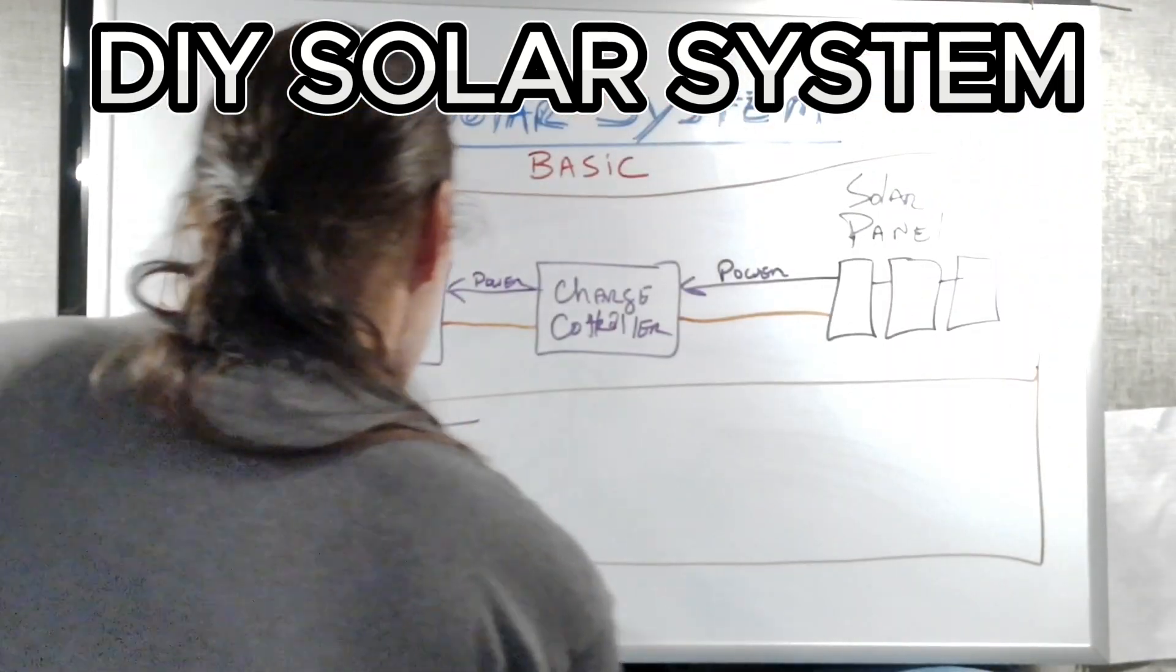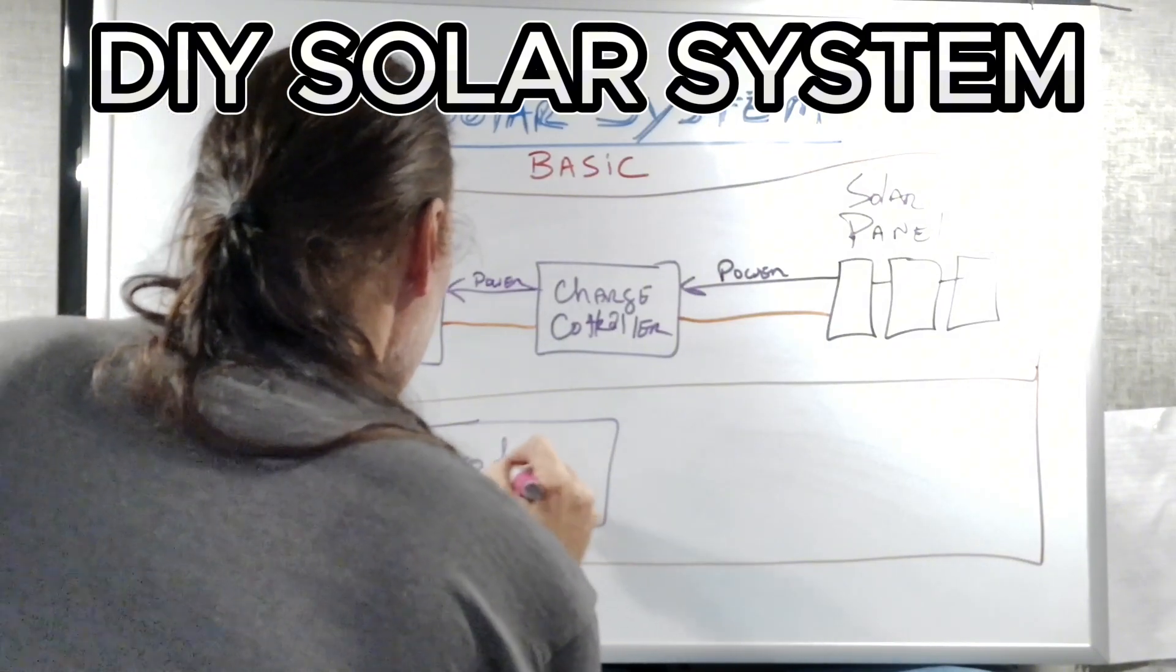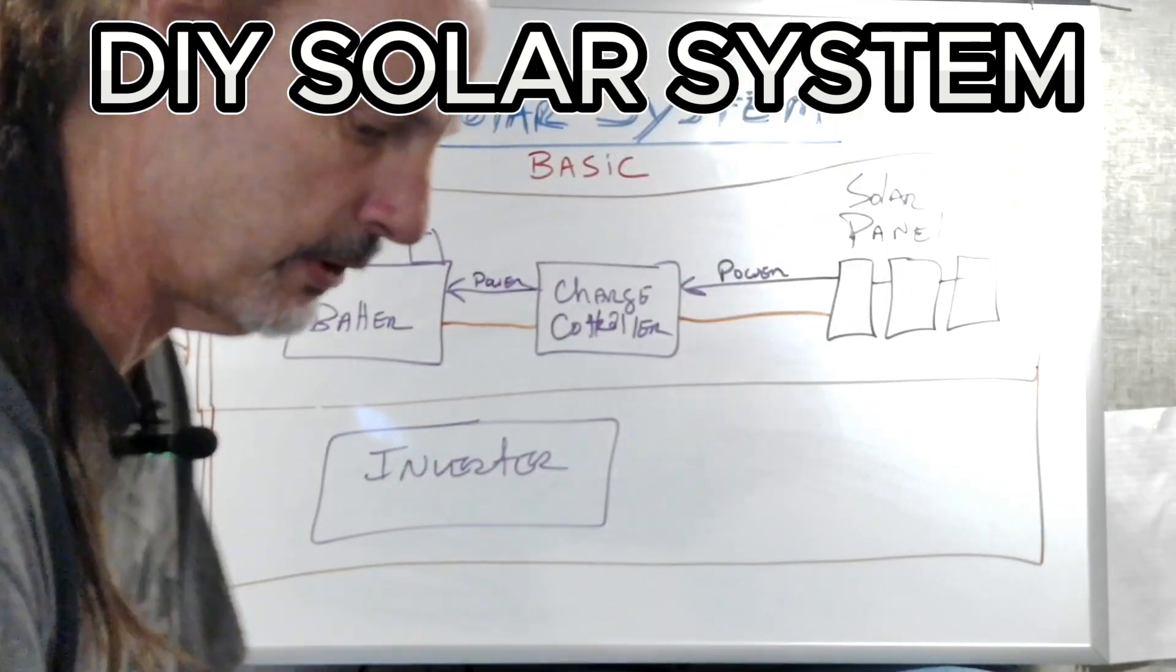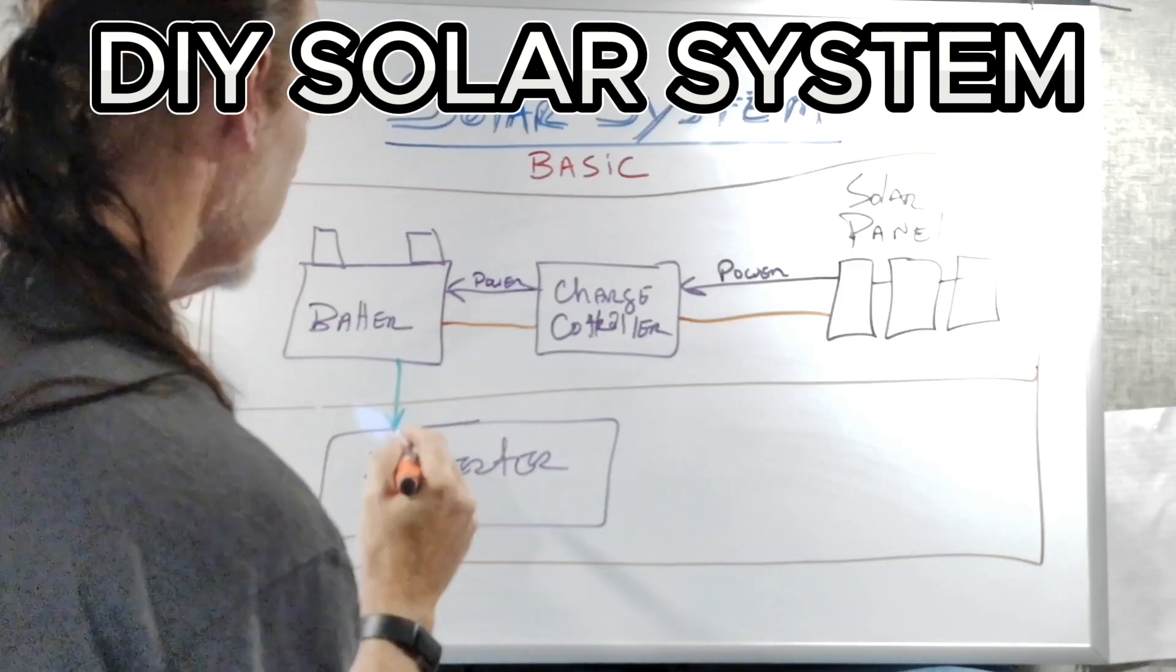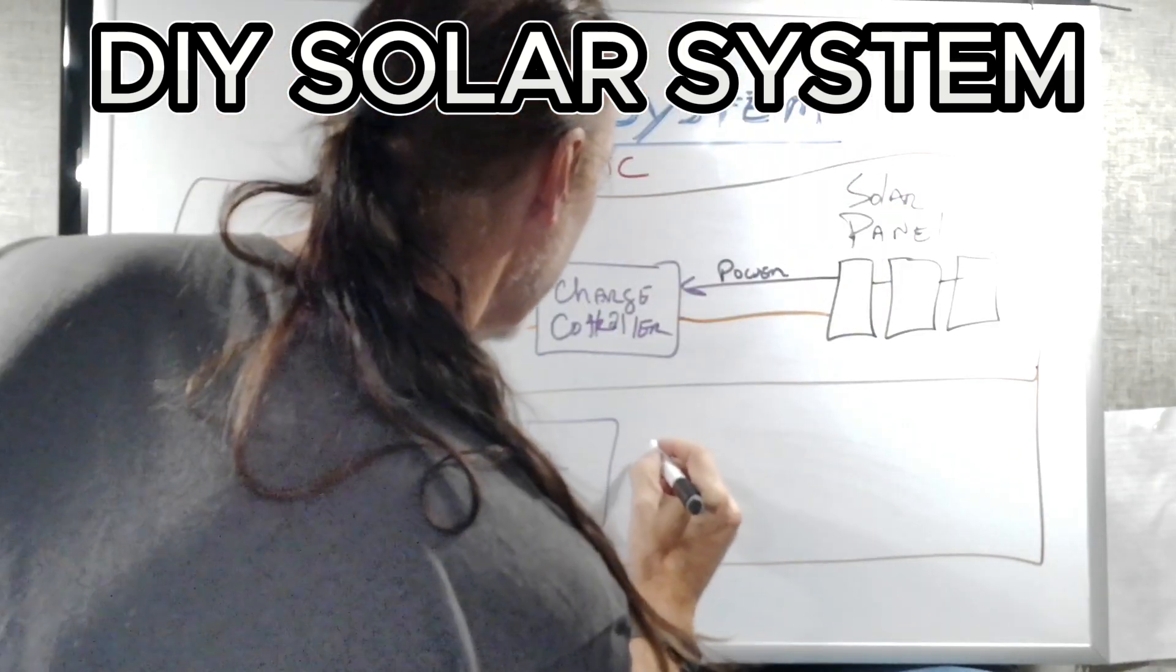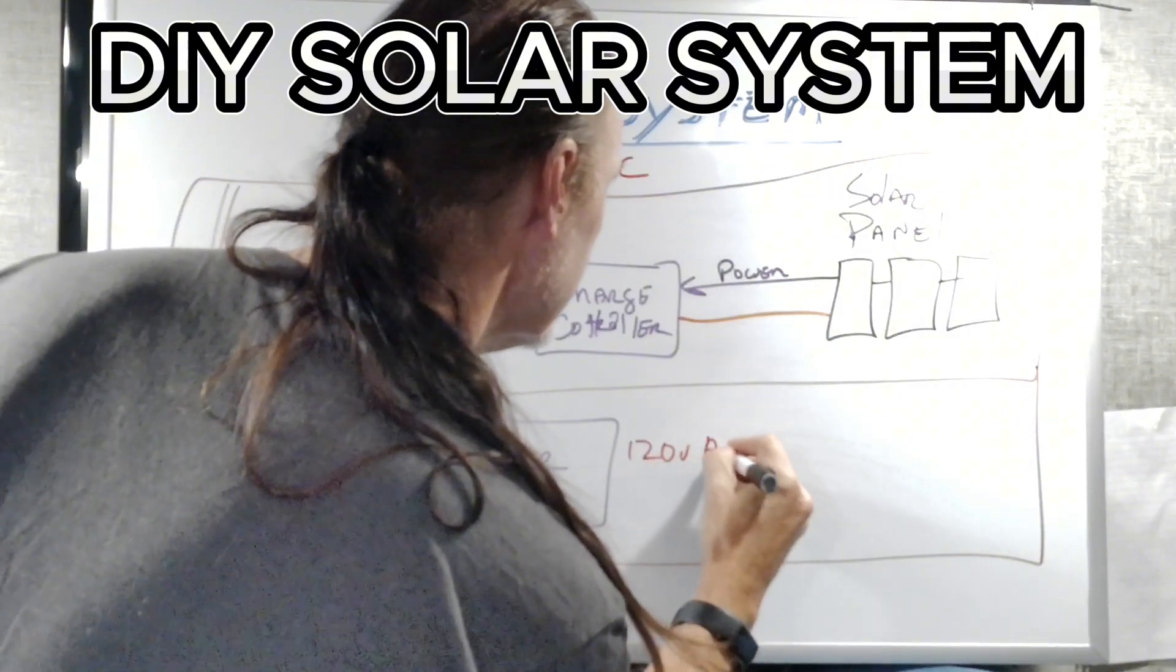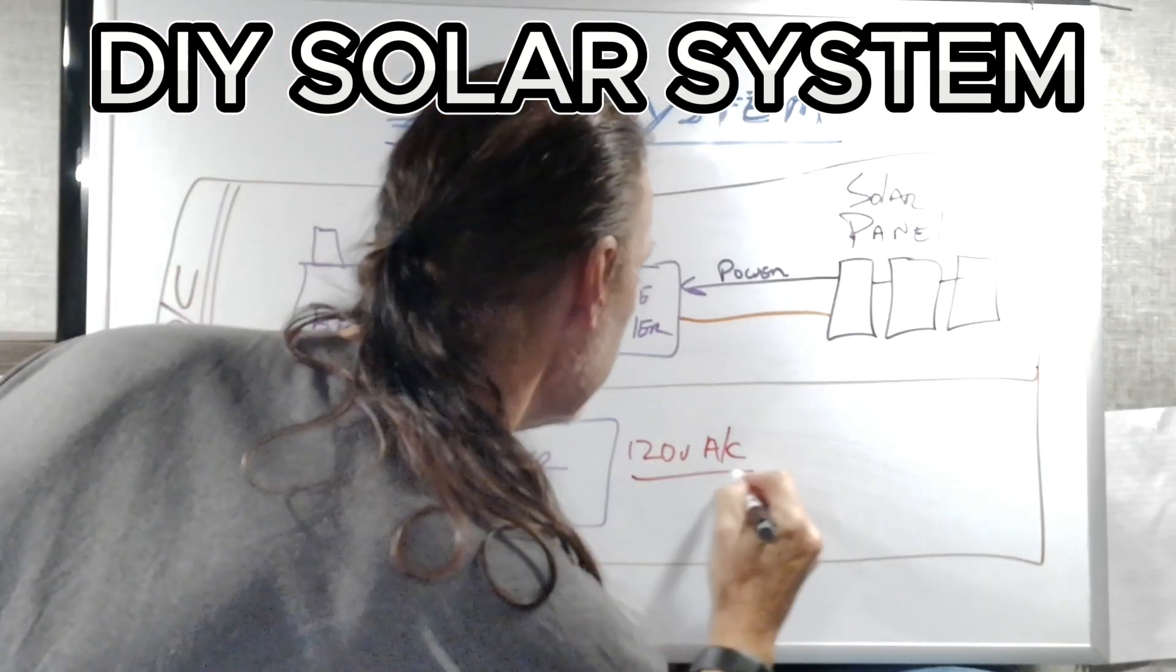The last one that we talked about is the inverter. The inverter does nothing but take the power from the battery, I'm going to use a different color, and give you 120 volts AC. This is the same as a house outlet.